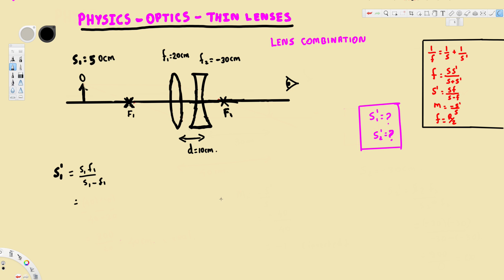Here we have a lens combination of a converging lens and a diverging lens, with an object placed 50 centimeters from the converging lens. The question is asking us to find the image distance due to the first lens and the image distance due to the second lens.